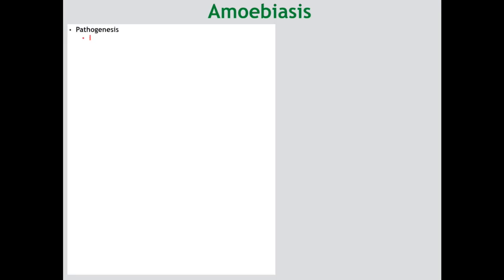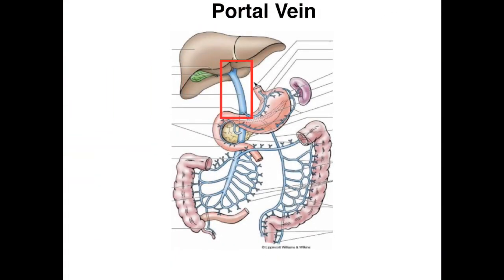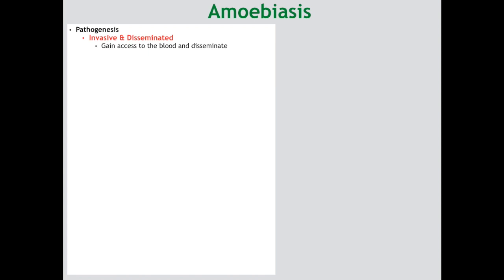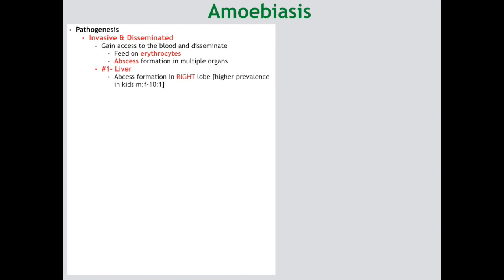Finally, we come to systemic amoebiasis. This occurs when invasive disease becomes disseminated by gaining access to the blood supply. Since it's found in the GIT, the first blood supply it gains access to is the portal venous circulation, where it can disseminate feeding on erythrocytes — you can actually pick it up on peripheral blood smear with engulfed RBCs in its cytoplasm. Once disseminated, it forms abscesses in multiple organs; due to portal venous circulation, the number one location is the liver — typically in the right lobe — with a male-to-female ratio of 10 to 1. It can also disseminate to the lung, spleen, and brain.